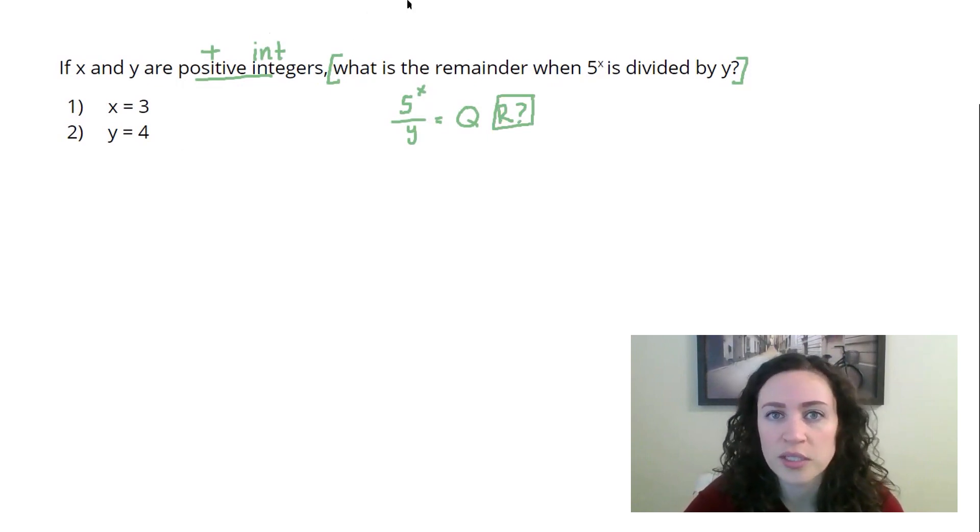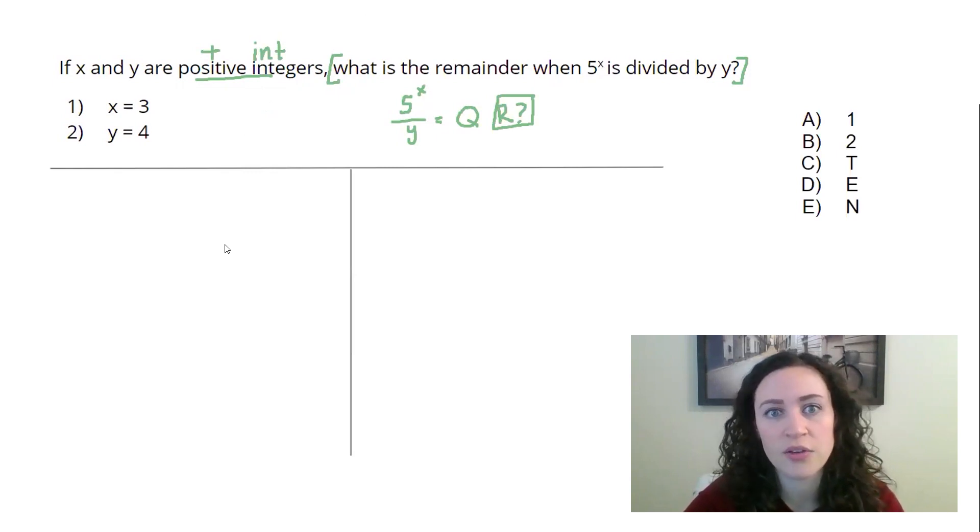Now you saw this t-chart appear because this is how Manhattan Prep recommends that you organize your work. This helps to avoid having sloppy work. When you have sloppy work, you may miss problems simply because your work wasn't organized. You get confused about whether something was an x or a t or a two or whatever it may be. You also saw these answer choices appear off to the right. This is a great mnemonic if you're struggling to remember what the answer choices stand for.